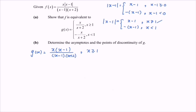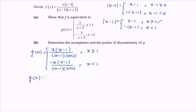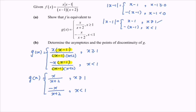For the second part, g(x) equals x multiplied with negative (x minus 1), over (x minus 1) multiplied with (x plus 2), with domain x less than 1. Simplifying, the common terms cancel. Finally, g(x) equals x over (x plus 2) for x greater than or equal to 1, and negative x over (x plus 2) for x less than 1. We have thus shown the piecewise form of g(x).